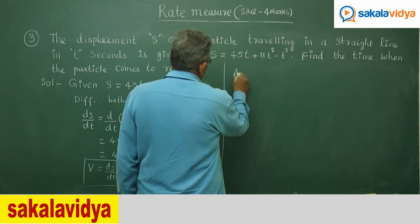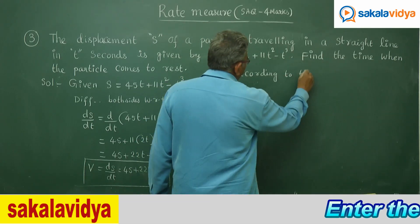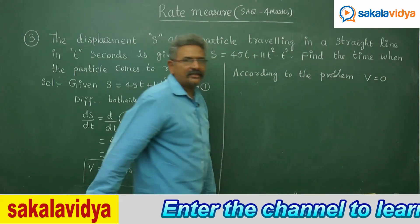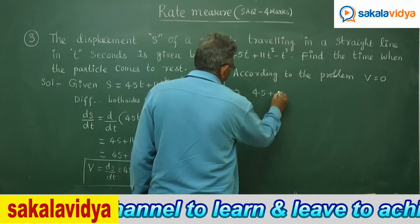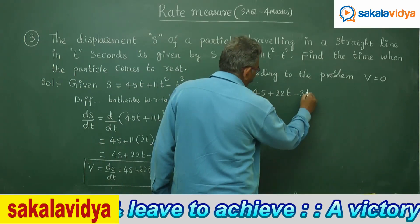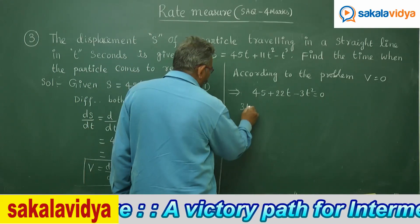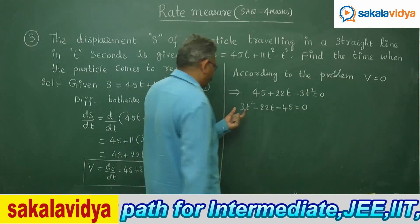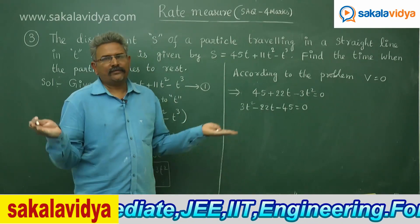Setting v = 0: 45 + 22t - 3t² = 0. Multiplying both sides by -1, we get 3t² - 22t - 45 = 0. This resembles a quadratic equation in terms of t, so let it be solved using the factorization method.